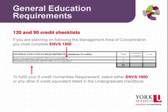The next section to fill out is General Education Requirements, which are the same for both the 120 and 90 credit programs. Your science requirement is ENVS 1500 Intro to Science of Environmental Studies. If you have completed this course, put a 6 under Completed or In Progress; otherwise put a 6 under To Do. You will also need to complete 6 credits in Humanities, which can be completed by taking ENVS 1800 Environmental Writing, or 6 credits from the Humanities list in the latest Undergraduate Handbook. In either case, put a 6 under the appropriate To Do or Completed column.